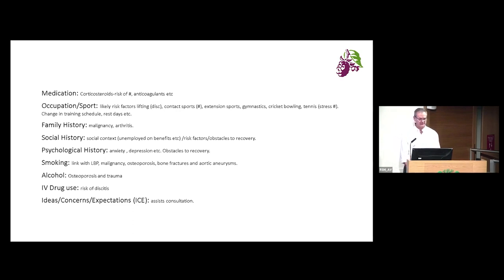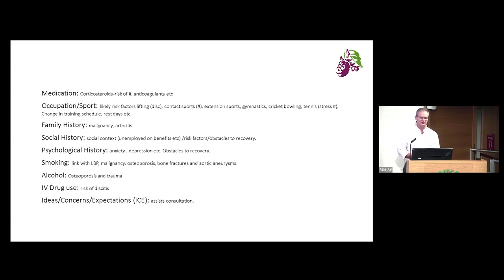Is there a family history of malignancy or arthritis? What's the social context — are they unemployed, from a broken home, or a single parent? These are all risk factors for back pain and what I call obstacles to recovery. The psychological history — anxiety, depression, or other psychoses — are all obstacles to recovery. Back pain is more common in smokers, as are malignancy, osteoporosis, and aortic aneurysms. Alcohol can cause osteoporosis and increase falls and trauma; IV drug use may lead to infections and discitis. Ask what the patient is expecting from the consultation, what they're worried about, and what they think is causing their back pain.